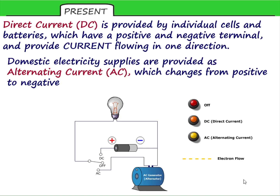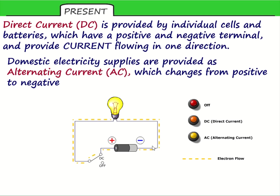Whether we have alternating or direct current comes from the type of supply. In a circuit you can have a battery or a generator, and each one provides a push to the electrons. The push from a battery is in a single direction, and the size of the current is steady from a battery — so that gives us a direct current, a direct push in one direction, a direct PD.